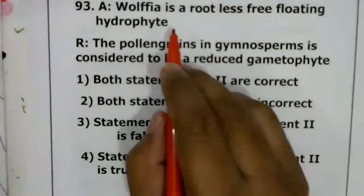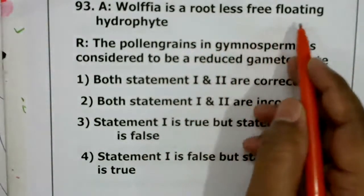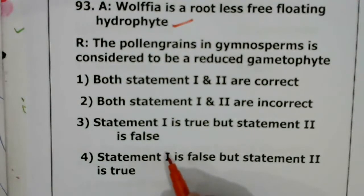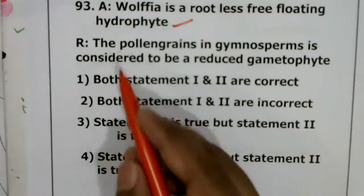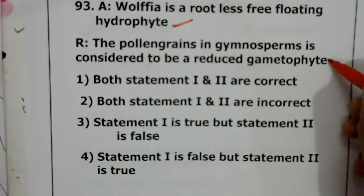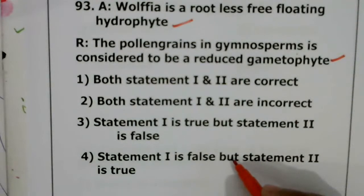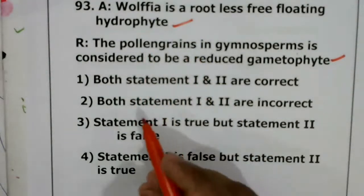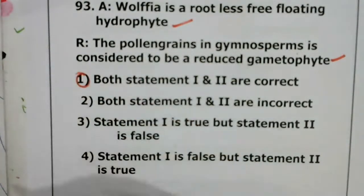Question 93: Wolffia is rootless, free-floating, and hydrophytic — yes, Wolffia is one of the smallest angiospermic plants and it is an aquatic plant freely floating in water without roots, so the first statement is correct. The reason: pollen grains in gymnosperms are considered reduced male gametophyte — yes, also correct. In angiosperms and gymnosperms, the reduced male gametophyte is called pollen grain. Both statements are correct. Question 93, first option.